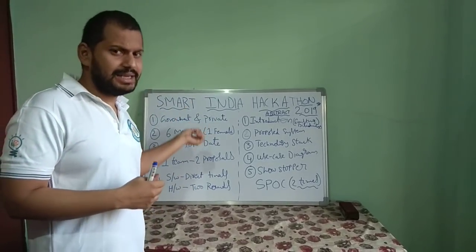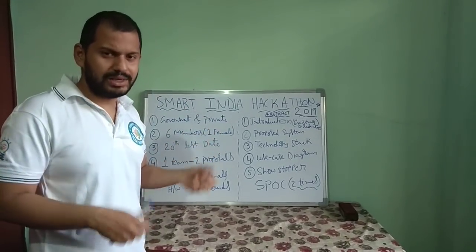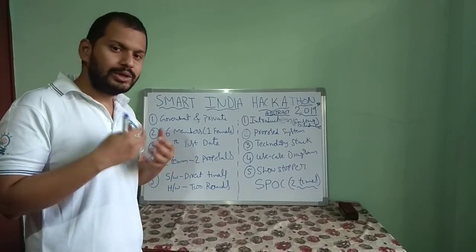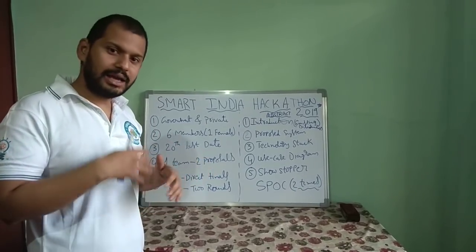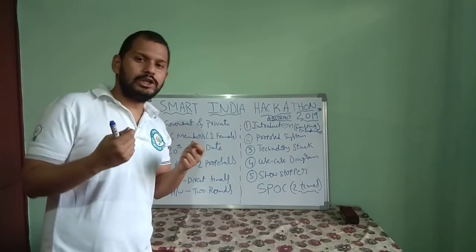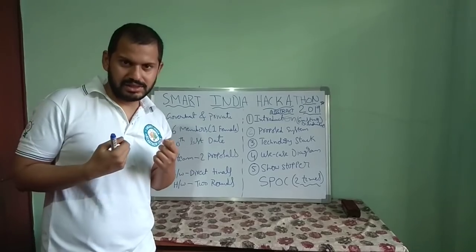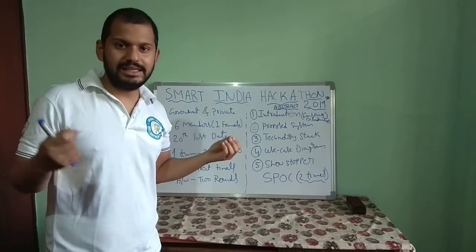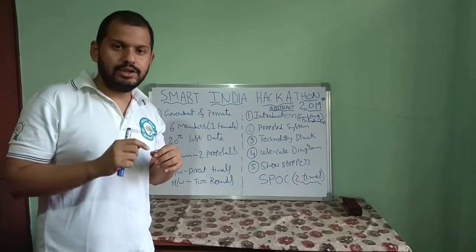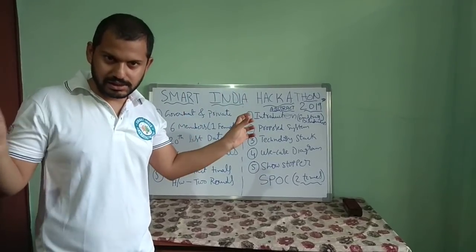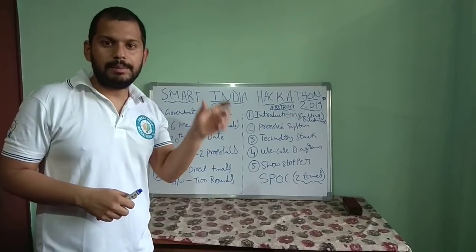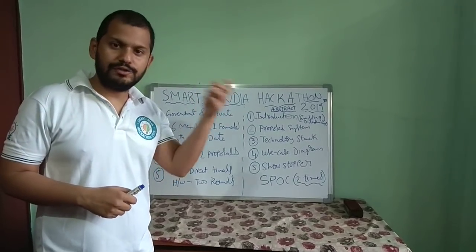Smart India Hackathon happens in two editions — one is the Software Edition and one is the Hardware Edition. You can participate in both or just one. If you log into the Smart India Hackathon 2019 website, you will find Problem Statements. Go directly to Problem Statements and choose which edition you want. If you are from a Computer Science or IT background, you can go for Software.